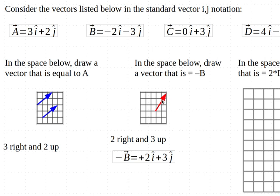And again, it doesn't matter where on this grid you draw it as long as it goes 2 to the right and 3 up, just like minus B would.